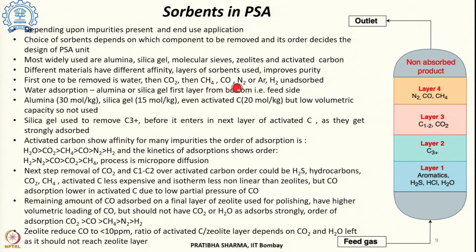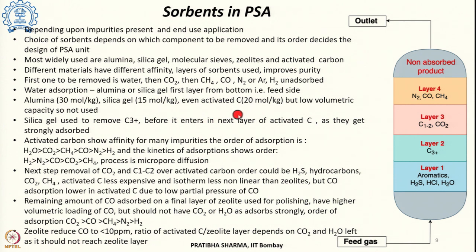Water is the first impurity removed in layer 1, for which alumina, silica gel, or activated carbon can be used. This layer can also remove aromatics, H2S and HCl. Alumina has a higher loading capacity of about 30 moles per kg, silica gel comparatively lower at 15 moles per kg, and activated carbon is in between at about 20 moles per kg, but it is not preferred because it has a low volumetric capacity.